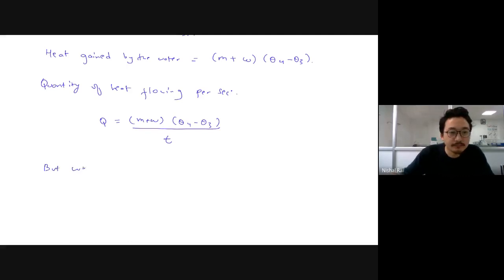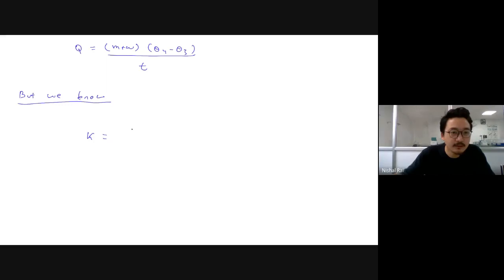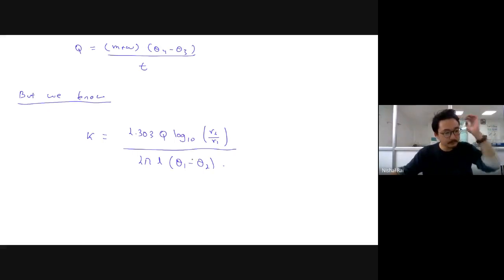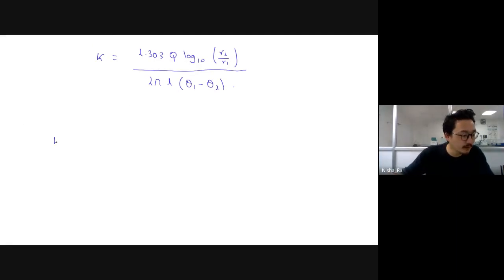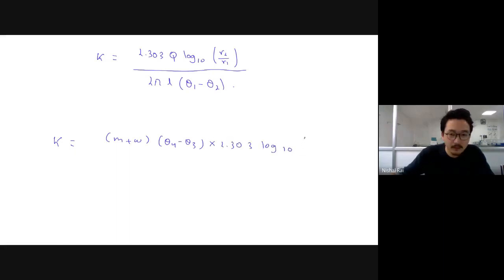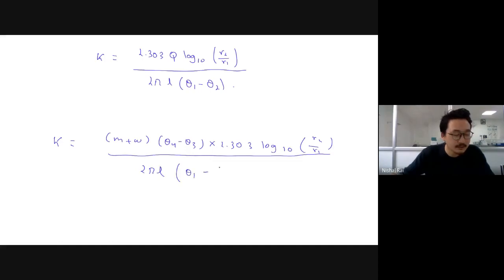For the cylindrical flow of heat, the thermal conductivity k is given by: k equals minus 2.303 times q times log base 10 of (r2 by r1), divided by 2 pi l (theta 1 minus (theta 3 plus theta 4) divided by 2) times t. Substituting q, thermal conductivity becomes k equals (m plus w)(theta 4 minus theta 3)(2.303)(log base 10 of r2/r1) divided by 2 pi l (theta 1 minus (theta 3 plus theta 4)/2) times t.